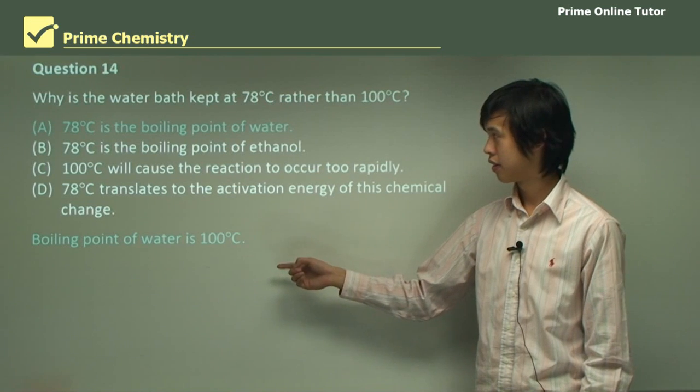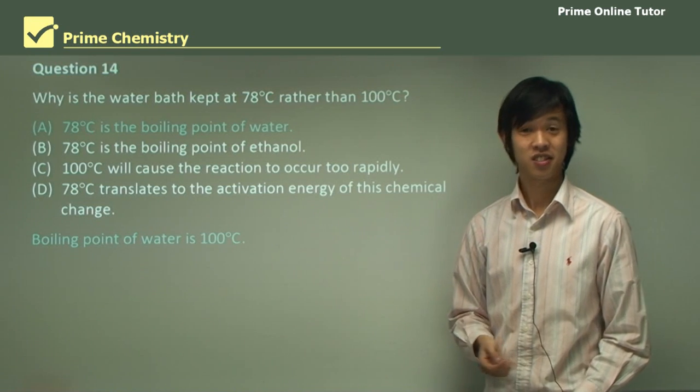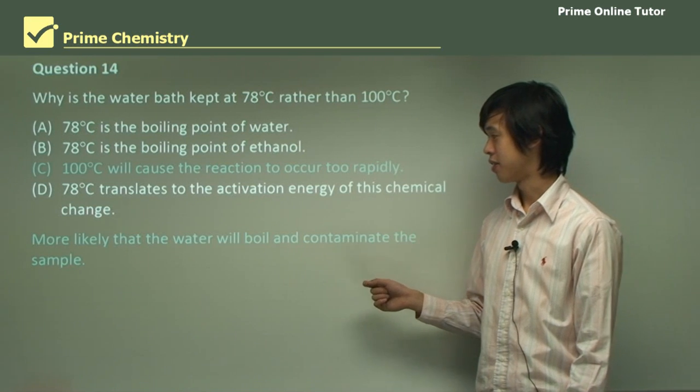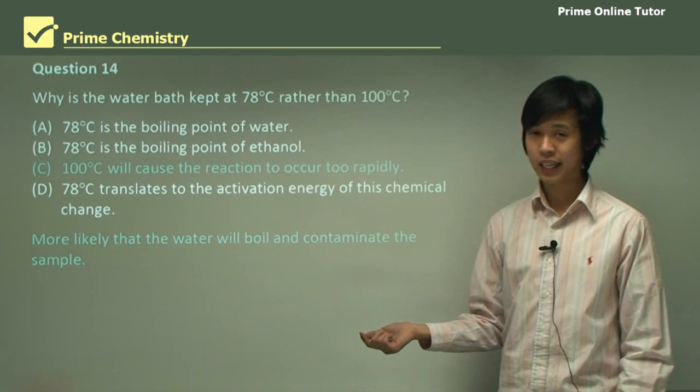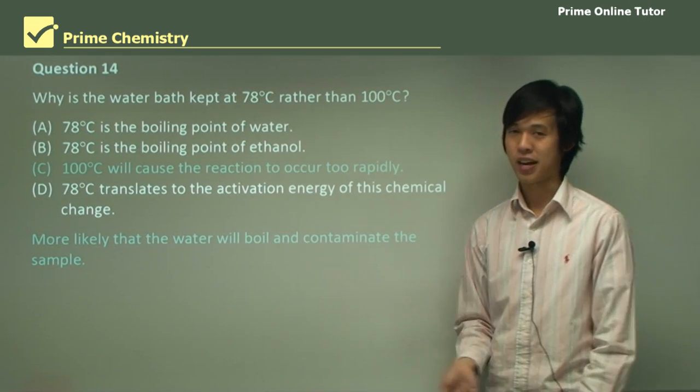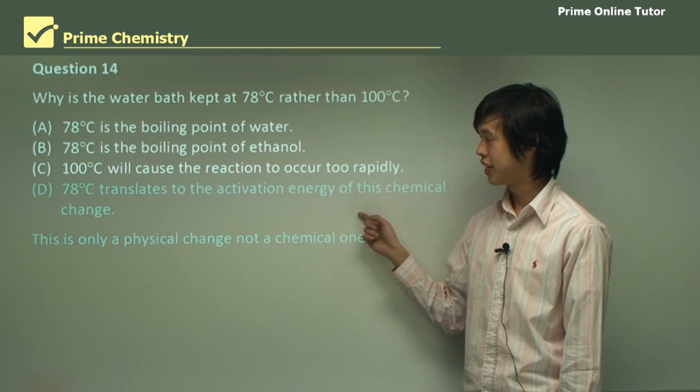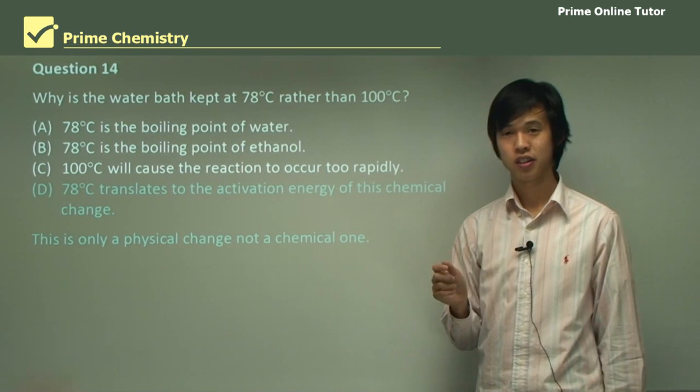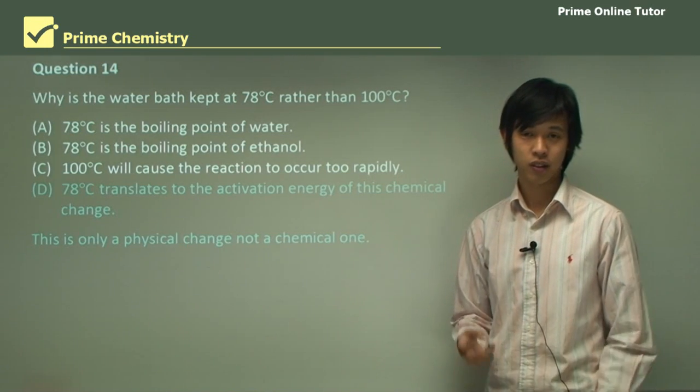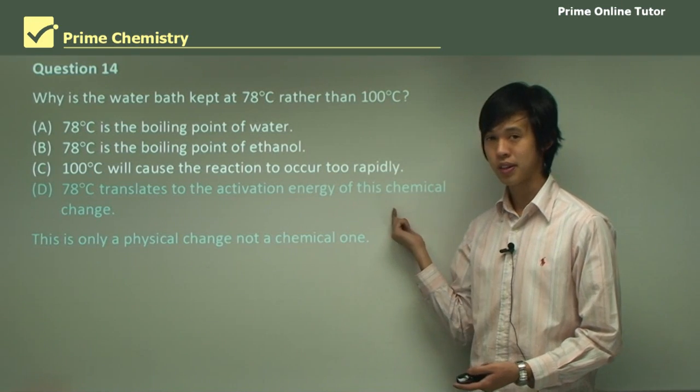So 78 is the boiling point of water. That doesn't really make sense, because we don't want to boil the water at all. And even then, the boiling point of water is 100 degrees. So that's not right. 100 degrees will cause the reaction to occur more rapidly. More likely than that, it will heat it up faster, but more likely the water will boil and contaminate our sample, which is bad. We don't want that. 78 degrees translates to the activation energy of this chemical change. So a lot of fancy words are there. But don't be fooled by it, because remembering this change is simply physical. We're just turning it from liquid to gas, so that's a physical change. And so it's not a chemical one, so this one can't be true.